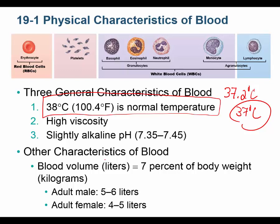Blood is very viscous due to its high protein content — albumin, fibrinogen, and globulins — as well as its high electrolyte concentration, including about 140 mmol/L of sodium and 110–120 mmol/L of chloride. It is the proteins that primarily give blood its high viscosity. Blood is also slightly alkaline.